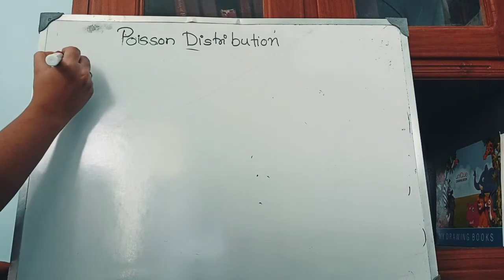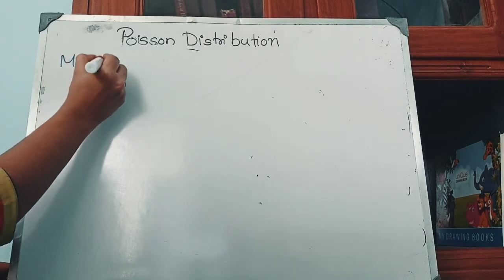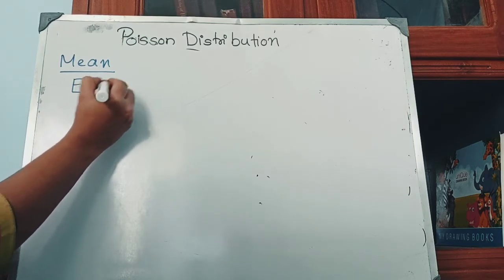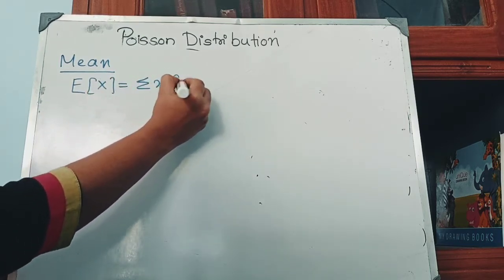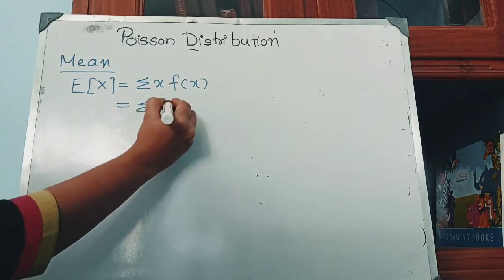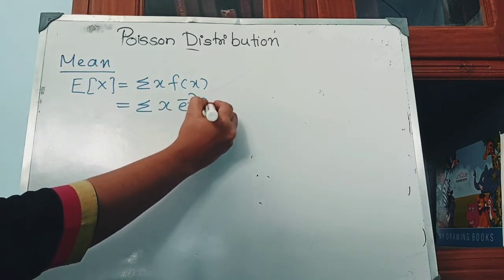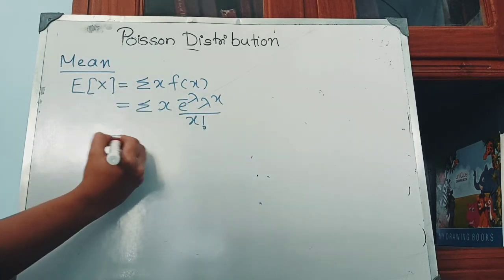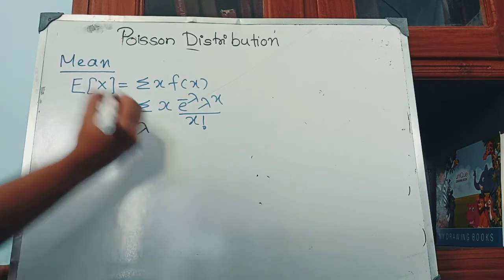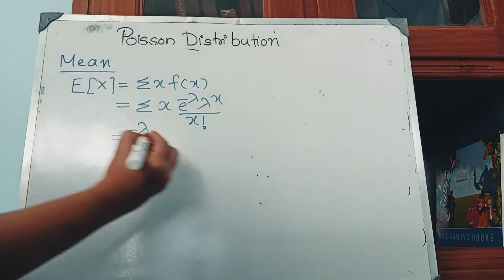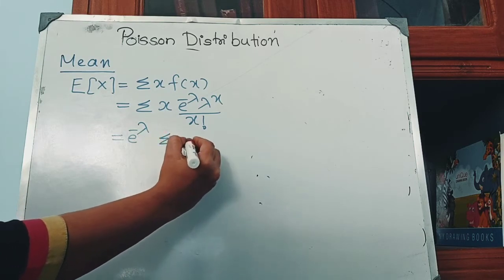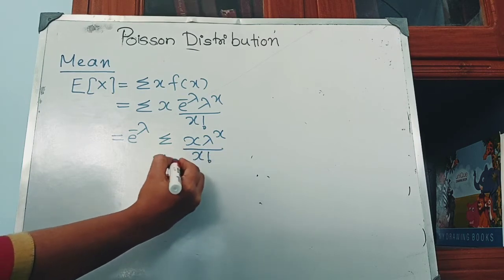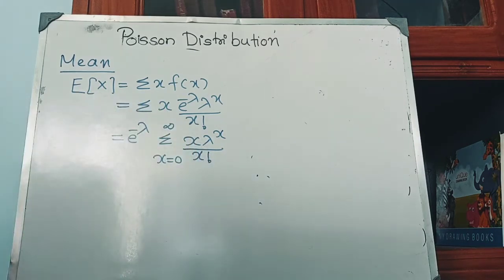Now we will find the mean of the Poisson distribution. We know that mean is equal to expectation of X, which equals sigma of x·f(x), where f(x) = e^(−λ) · λ^x / x!. Since e^(−λ) is independent of x, we can take it outside the summation. So we have e^(−λ) · sigma of x · λ^x / x!, where x is from 0 to infinity.